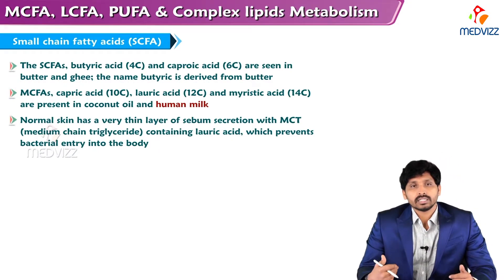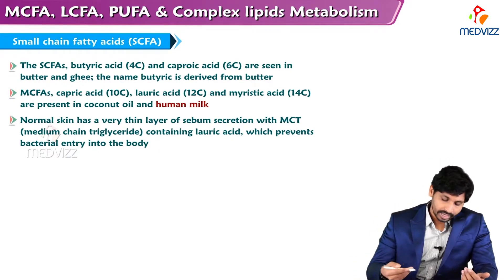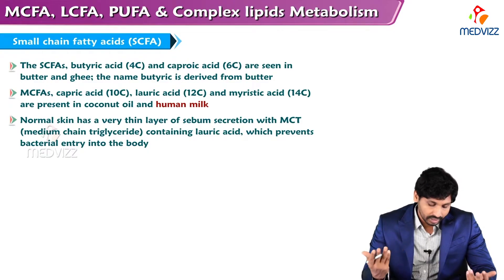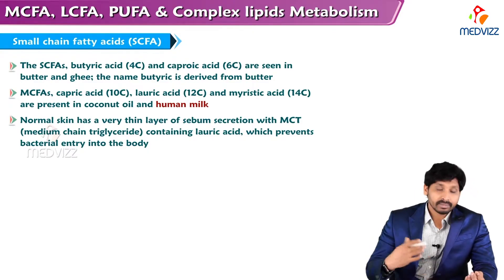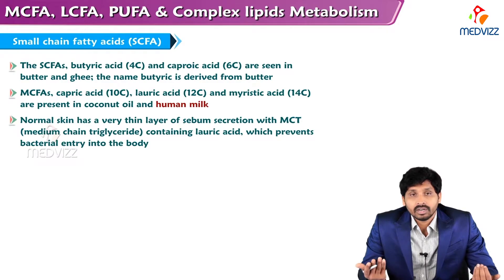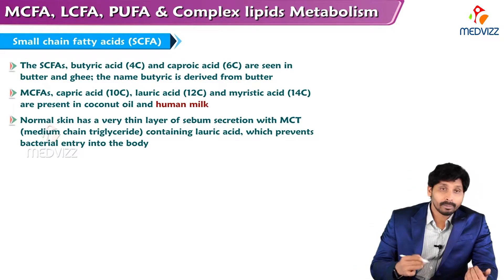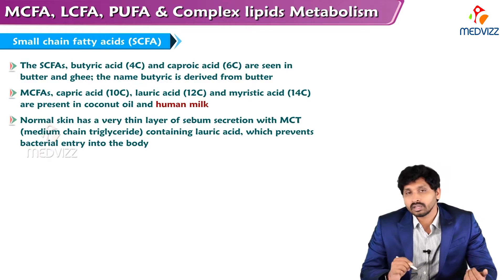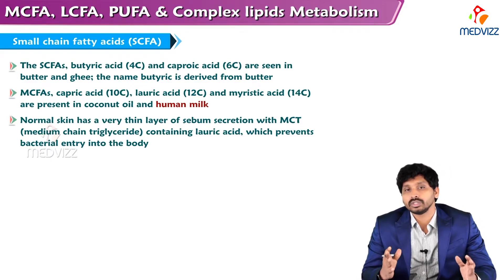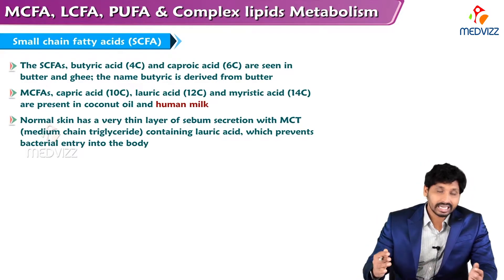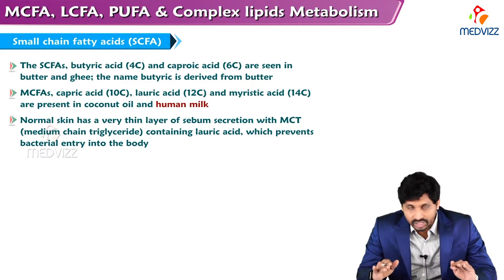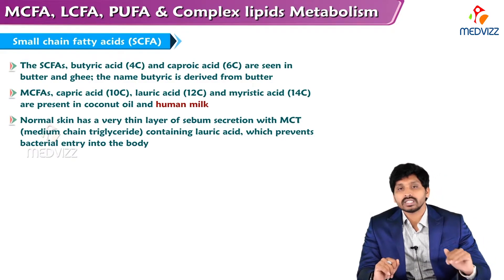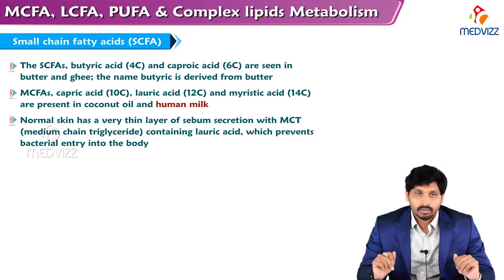One by one we'll see: small chain fatty acids include butyric acid, caproic acid (6 carbon), and propionic acid (4 carbon). Medium chain fatty acids include capric acid (10 carbon), lauric acid (12 carbon), and myristic acid (14 carbon). They are all present in human milk and serve as an important source of energy for newborn babies. Normal skin has a thin layer of sebum secretion with medium chain triglyceride containing lauric acid, which prevents bacterial entry into the body.